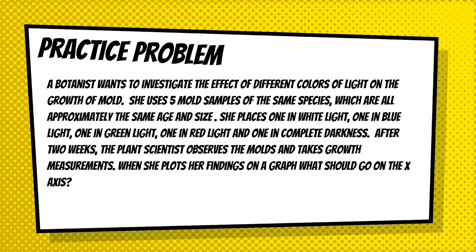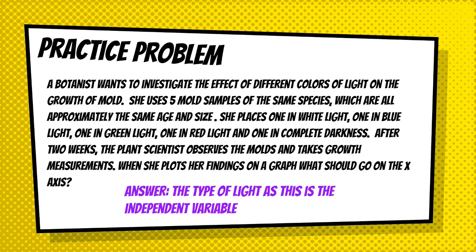In our second practice problem, a botanist wants to investigate the effect of different colors of light on the growth of mold. She uses five mold samples of the same species, approximately the same age and size, placed in white, blue, green, and red light, with one sample in complete darkness. After two weeks she observes the molds and takes growth measurements. When she plots her findings on a graph, what goes on the x-axis? The x-axis is always the independent variable — the thing the scientist is intentionally changing — which here is the type of light. The growth patterns are measured to see if there's a response to that independent variable.